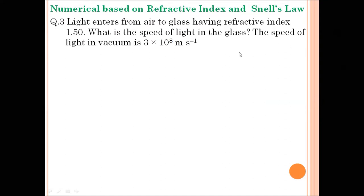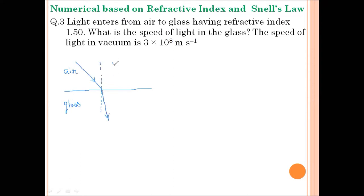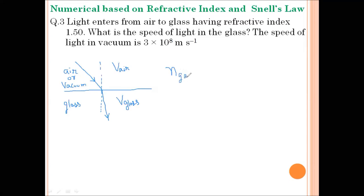Question number three: light enters from air to glass having a refractive index of 1.50. What is the speed of light in the glass? The speed of light in vacuum is 3 × 10⁸ m/s. We have been given a ray of light entering from medium air into medium glass. Let the speed of light in medium air be v_air and the speed of light in medium glass be v_glass. We assume the speed of light in air and vacuum are the same.